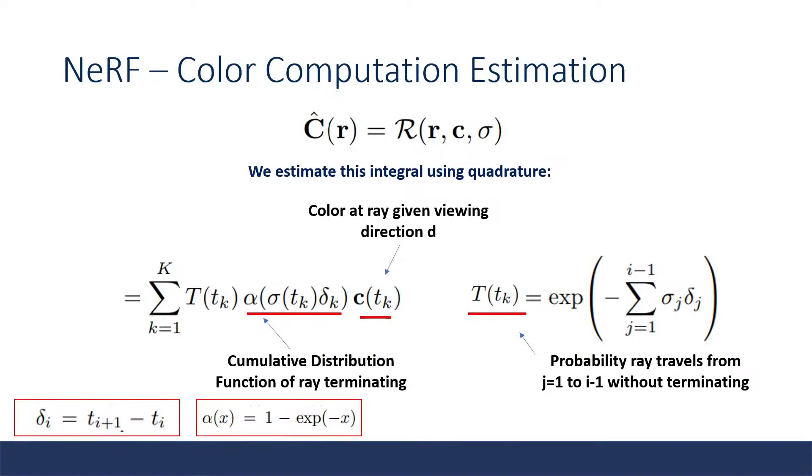Due to the integral being very difficult to calculate and backpropagate, NeRF uses quadrature to estimate the volumetric rendering. This formula is the exact same as before except now we work in delta time steps and we have a cumulative distribution function of the ray terminating to approximate our integral.